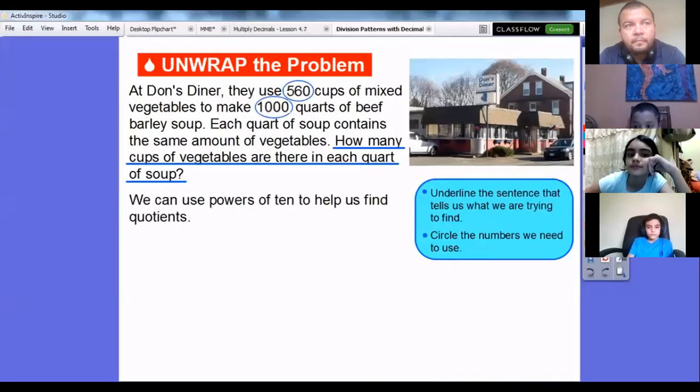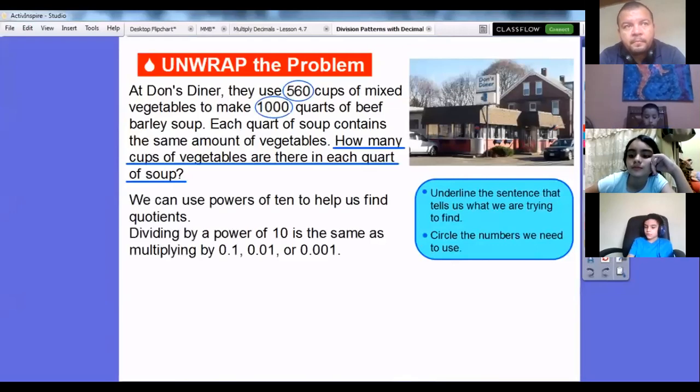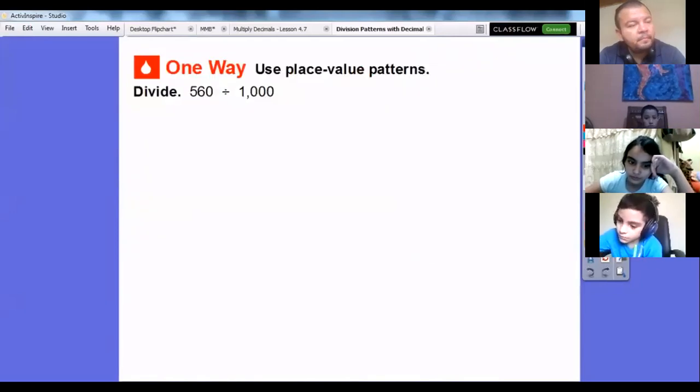We can use powers of 10 to help us find our quotient. Dividing by a power of 10 is the same as multiplying by 0.1 or 0.01 or 0.001. Remember, this is one tenth, here's one hundredth, and this is one thousandth. We're going to be multiplying by one thousandth, which is the same as dividing by 1,000.